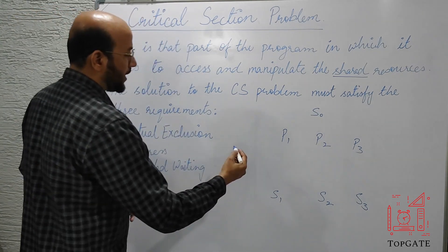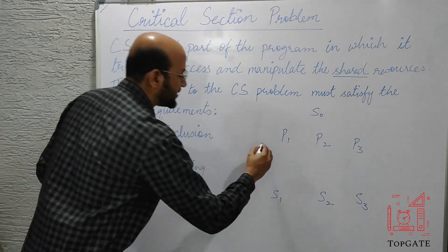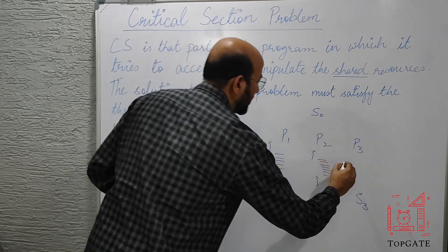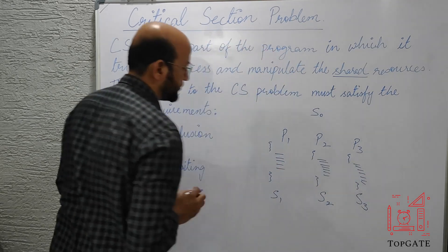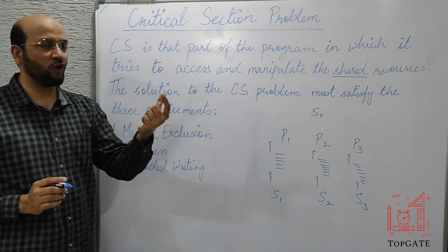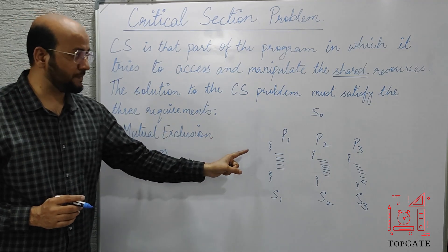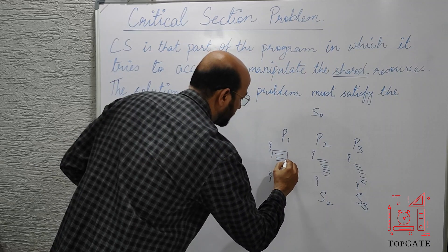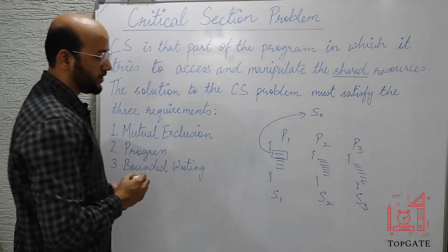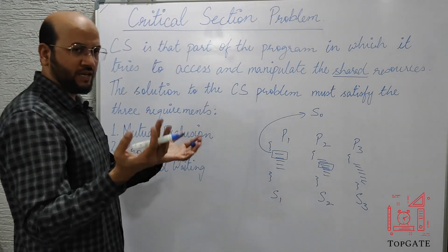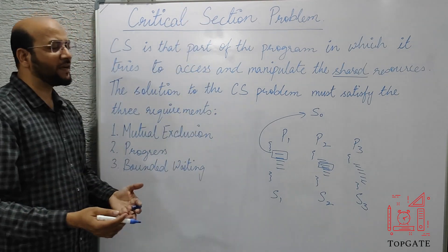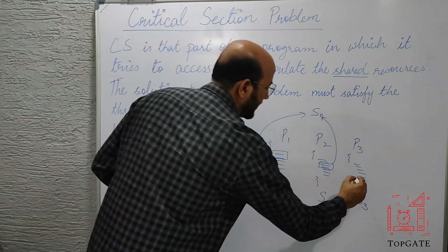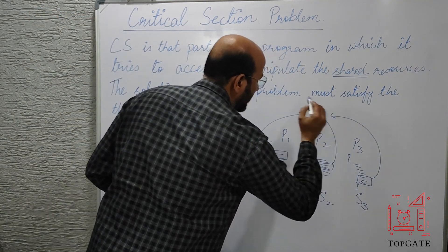If we talk about the program, suppose P1 has certain instructions. P2 also has certain instructions, and similarly P3 also has certain instructions. The critical section is that segment of the program in which the program is accessing the shared resource. So P1 will have one segment of code in which it is accessing the shared resource S0. Similarly, P2 also has one such segment, and P3 also has one segment of code in which it is using this shared resource S0.